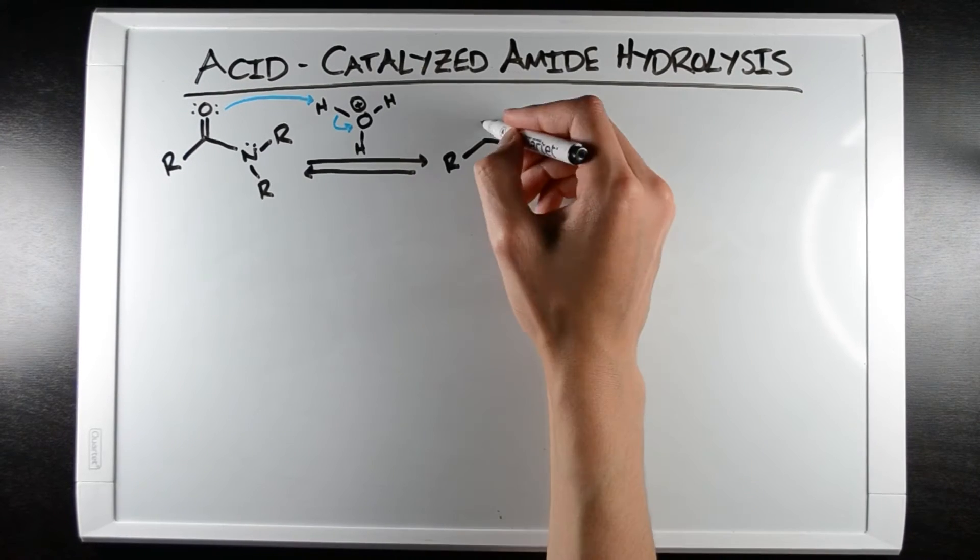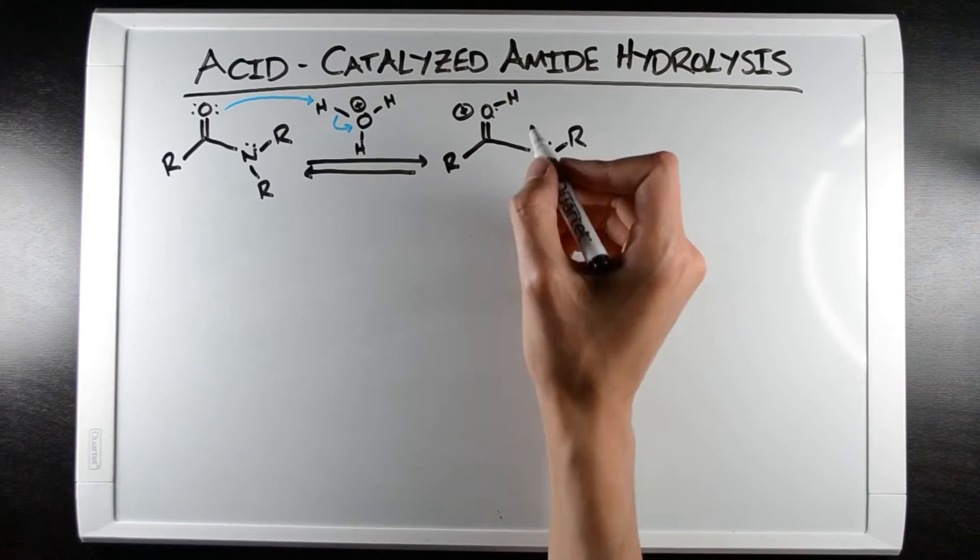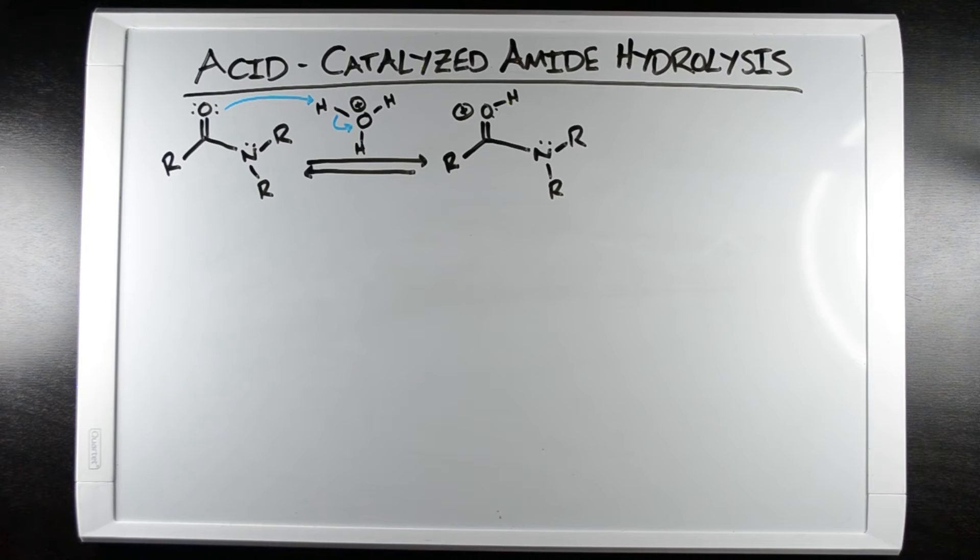This leaves a positive charge on the oxygen. Oxygen is already more electronegative than the carbon it is double bonded to, and this, combined with a new positive charge, means that oxygen strongly pulls electron density away from the carbonyl carbon.